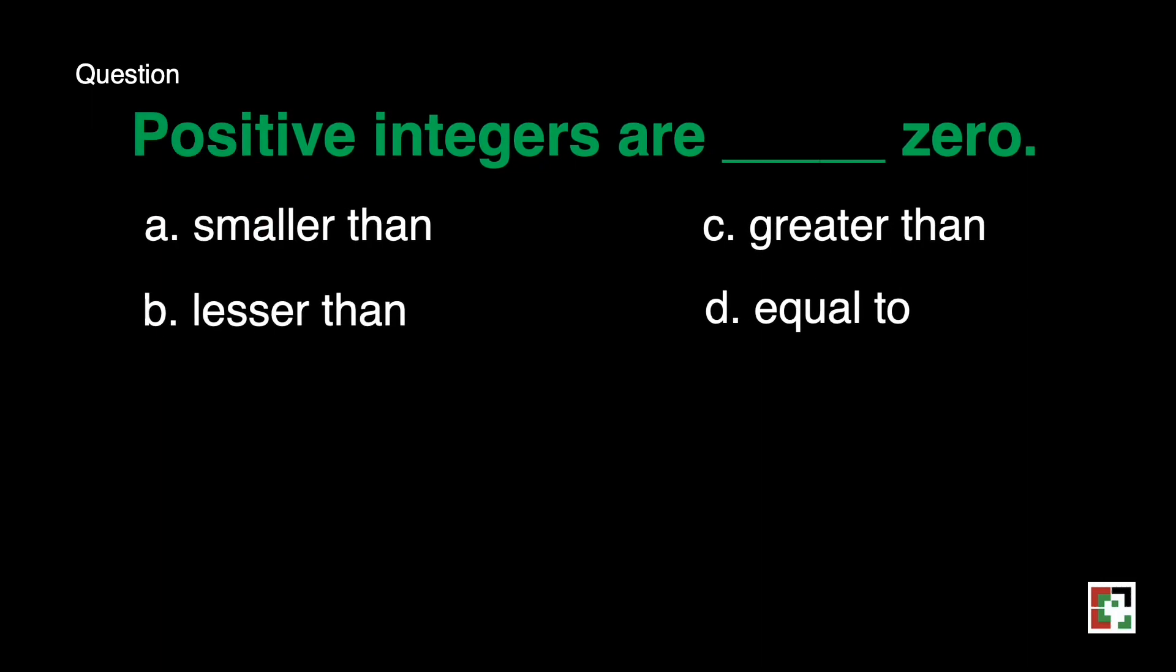Next, positive integers are blank zero. A, smaller than. B, lesser than. C, greater than. D, equal to. The answer is greater than. Why is that so? We can locate positive integers after zero, or at the right side of the number line, signifying it is greater in terms of value compared to zero.